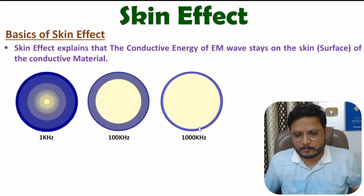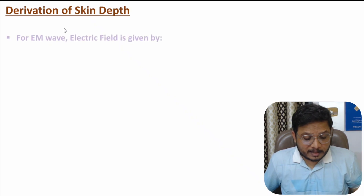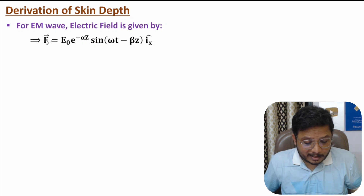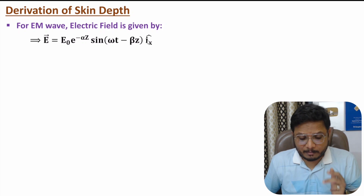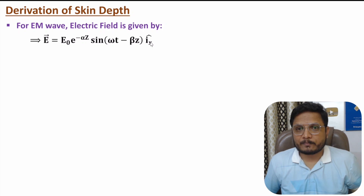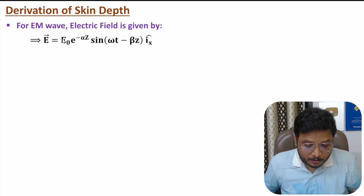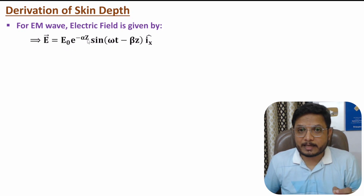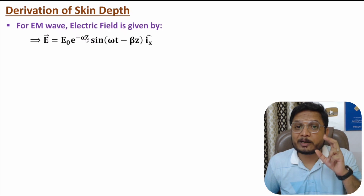To understand skin effect, I'll derive the equation of skin depth using the equation of EM waves. With an EM wave, the electric field is: E = E0 · e^(−αz) · sin(ωt − βz) · x̂. This means the EM wave is propagating in the direction of the z-axis and the oscillation of the electric field is happening with respect to the x-axis. The amplitude portion E0 · e^(−αz) means the amplitude of the electric field is decreasing with respect to the attenuation constant alpha, where z is the direction of propagation.